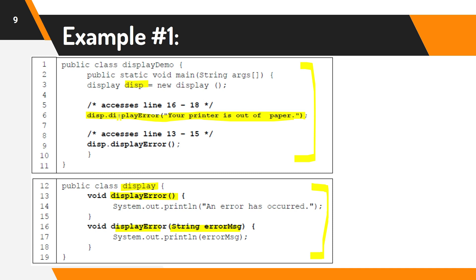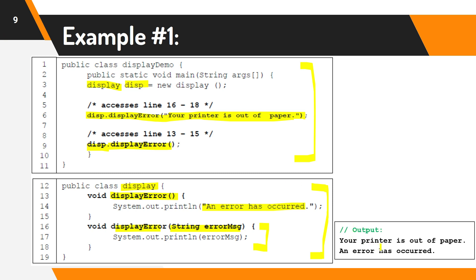This means that this line accesses lines 16 to 18. While for this one, DISP — referring again to the reference created — accesses the displayError with no parameter, referring to lines 13 to 15. So the output of our program is: 'your printer is out of paper', displaying the string value, and then 'an error has occurred' from the displayError with no parameter.